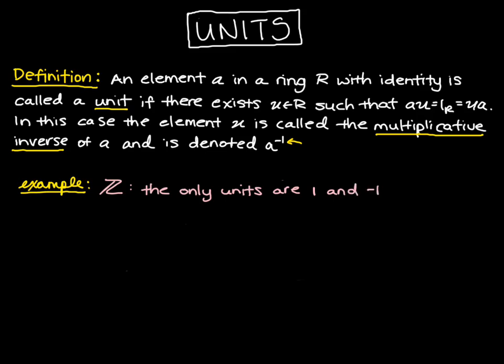And why is this? There is no other integer that you can multiply by another integer and get one. So let's take three for instance. If we try to find another integer to multiply by three to get one, we can't. If we multiply three times one-third we could get one, but one-third is not an integer. So the only units in the integers are one and negative one.